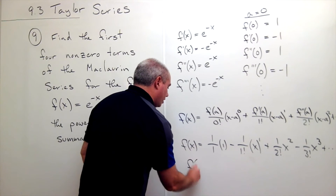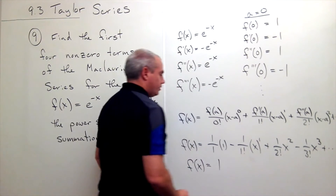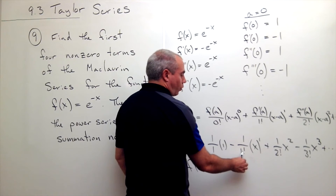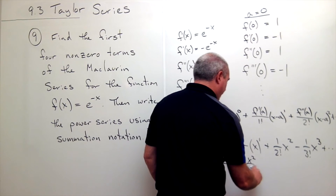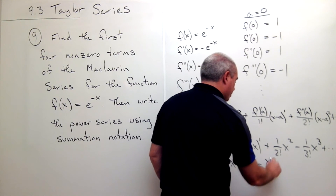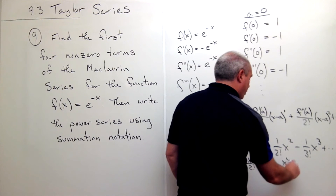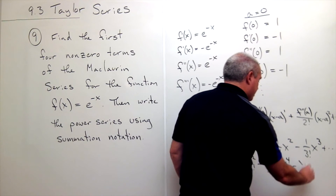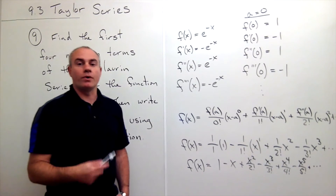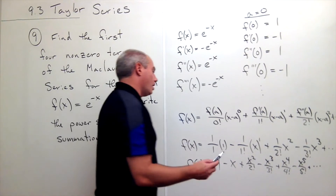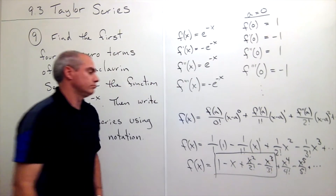If I want to write them a little better simplified: this first one is just one, then I get minus x, then I get plus x squared over two factorial, minus x cubed over three factorial. We could even see how it goes from here — it would be plus x to the fourth over four factorial, minus x to the fifth over five factorial, and so on. So we were able to write the first four terms of this Maclaurin series — in fact they're right here. Those are the first four terms.